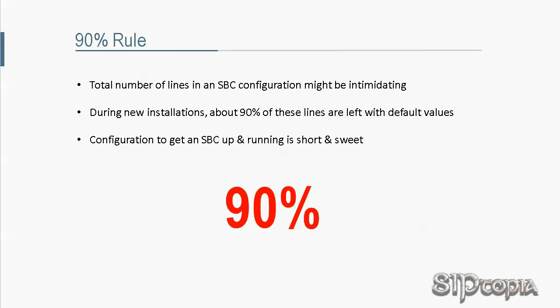The 90% rule — you might not have heard this before because this is something we came up with. The total number of lines in an SBC configuration might be quite intimidating, but during new installations, if you pay attention, about 90% of these lines are left with default values. An average configuration to get an SBC up and running is actually short and sweet. That is why we start this series by introducing the 90% rule.